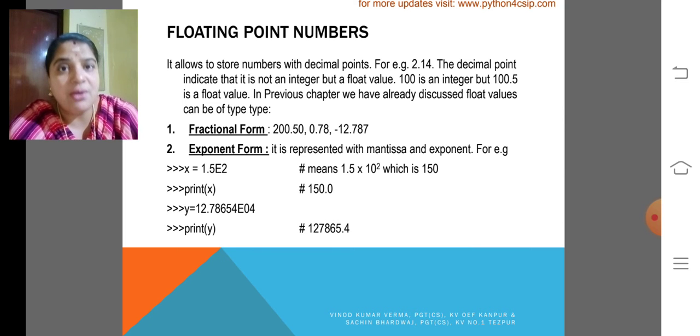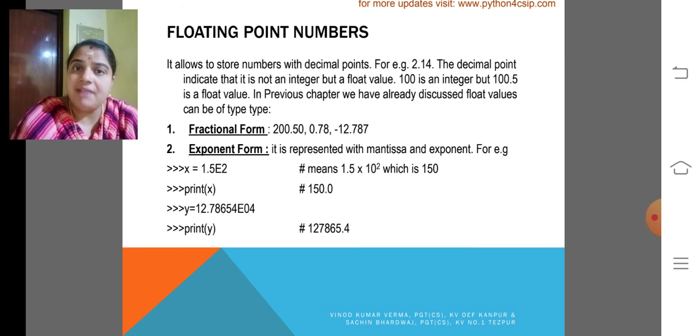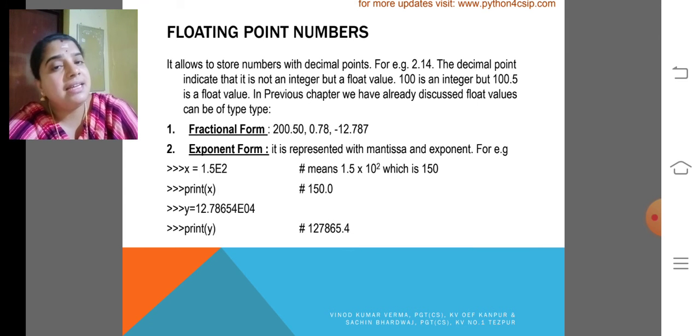My dear children, what is the second category of numbers data type? It is float. We had studied about integer type. Here we are discussing floating point numbers.